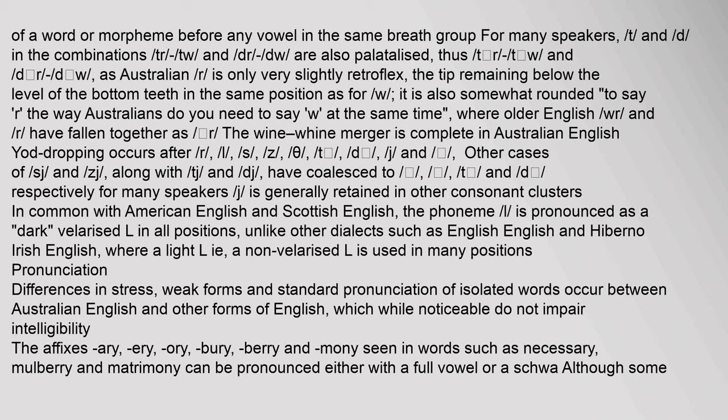For many speakers, the consonants 't' and 'd' in the combinations 'tr', 'tw', 'dr', and 'dw' are also palatalized. Australian 'r' is only very slightly retroflex, the tip remaining below the level of the bottom teeth. It is also somewhat rounded — to say 'r' the way Australians do, you need to say 'w' at the same time.